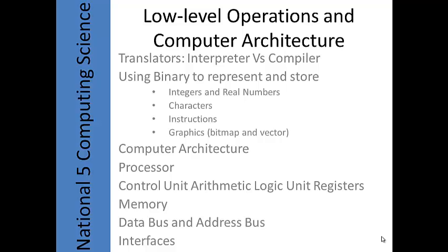Our choices are either an interpreter or a compiler. In practice we use both. We use an interpreter whilst we're working on our programs, whilst still in development. Every time there's an error, intentional or accidental, an interpreter takes one line of code at a time, tries to translate and execute it. If it successfully executes that line, it moves on to the next, repeating until the end of the file if there are no errors. The first error it comes across, it stops — which is really good during development because you can spot errors as you create them. So the interpreter is really good for detecting errors.